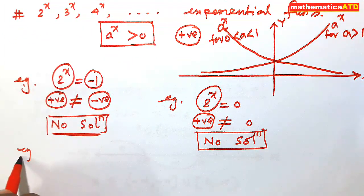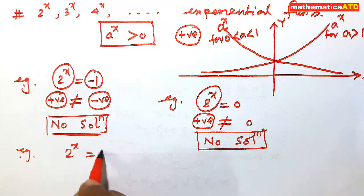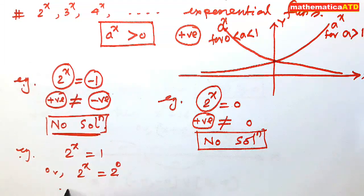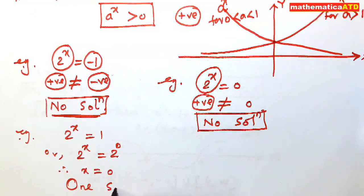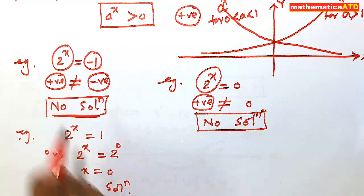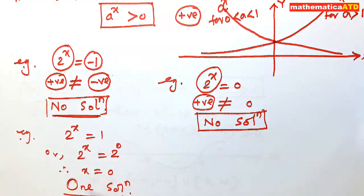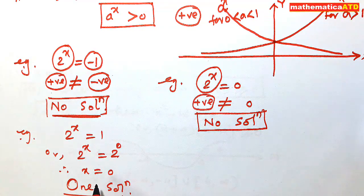Third question: if 2 to the power x equals 1, from this I get 2 to the power x equals 2 to the power 0. The bases are both 2, so the powers must be equal: x equals 0. There is exactly one solution. Out of these three examples, the first two have no solution, and the third has one solution: x equals 0.